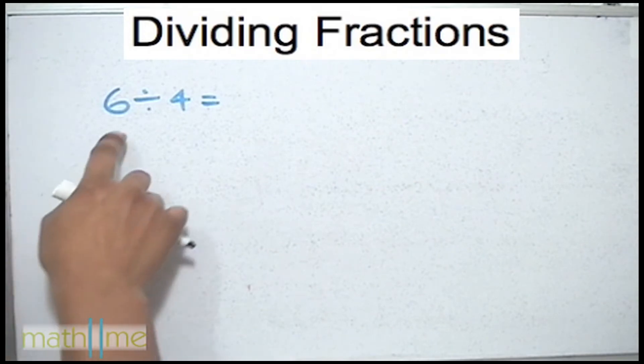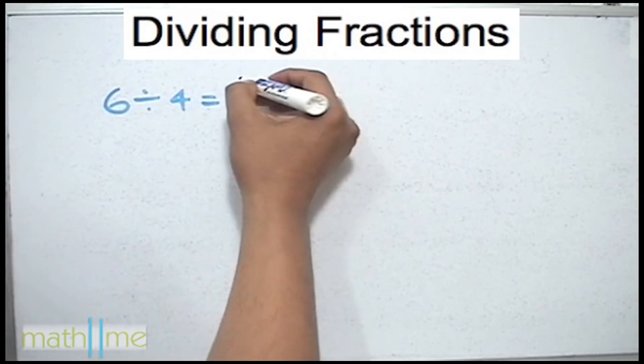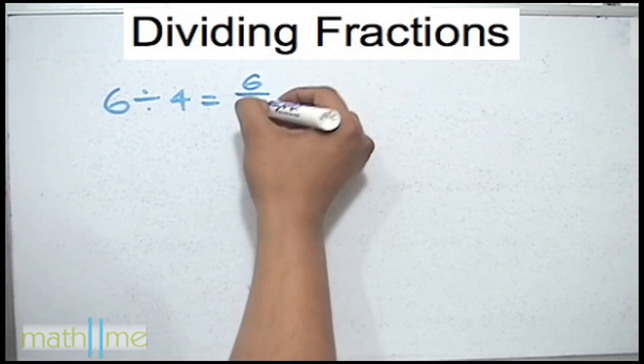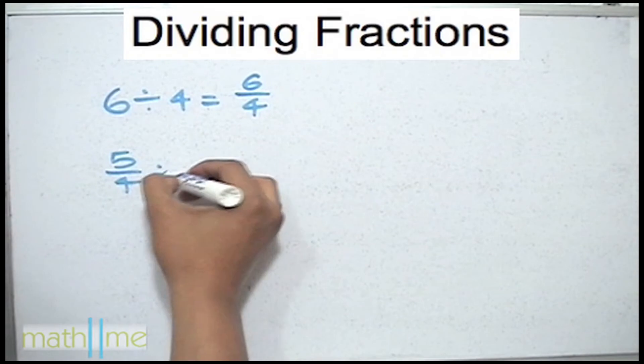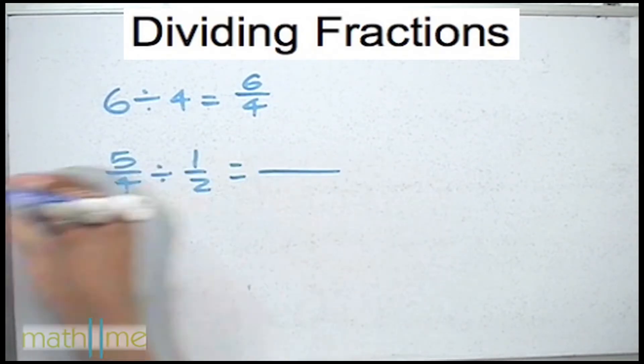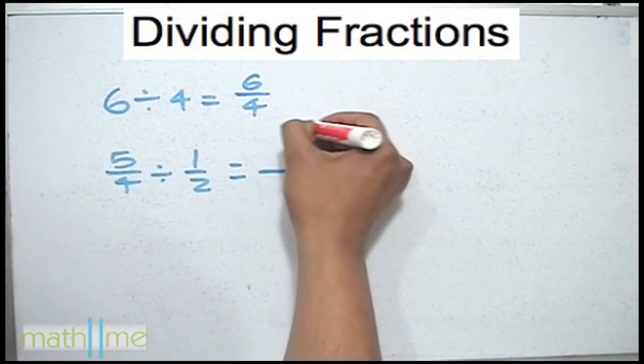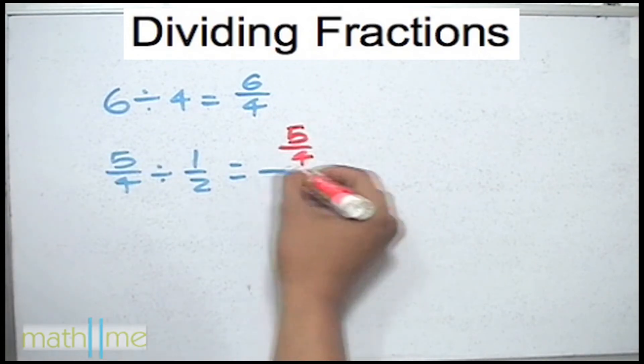Keep in mind that a division which can be written as 6 divided by 4 also can be written as 6 quarters. So if you have two fractions, for example 5 quarters divided by a half, this is a fraction and this is another one.